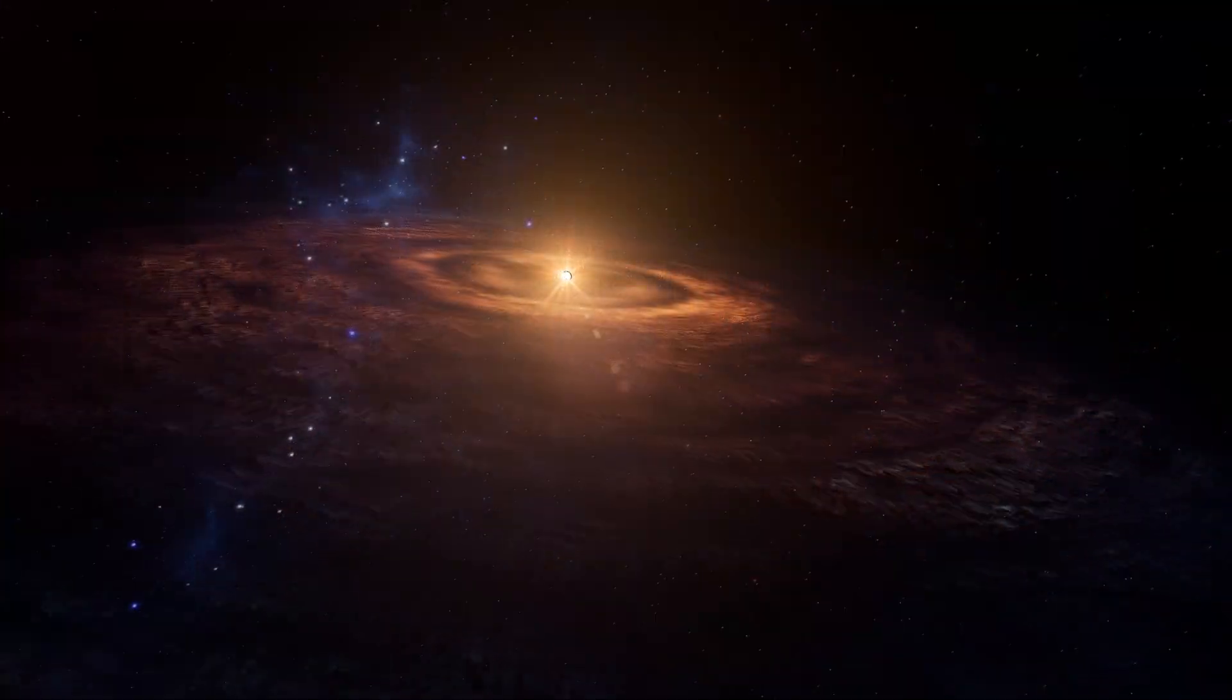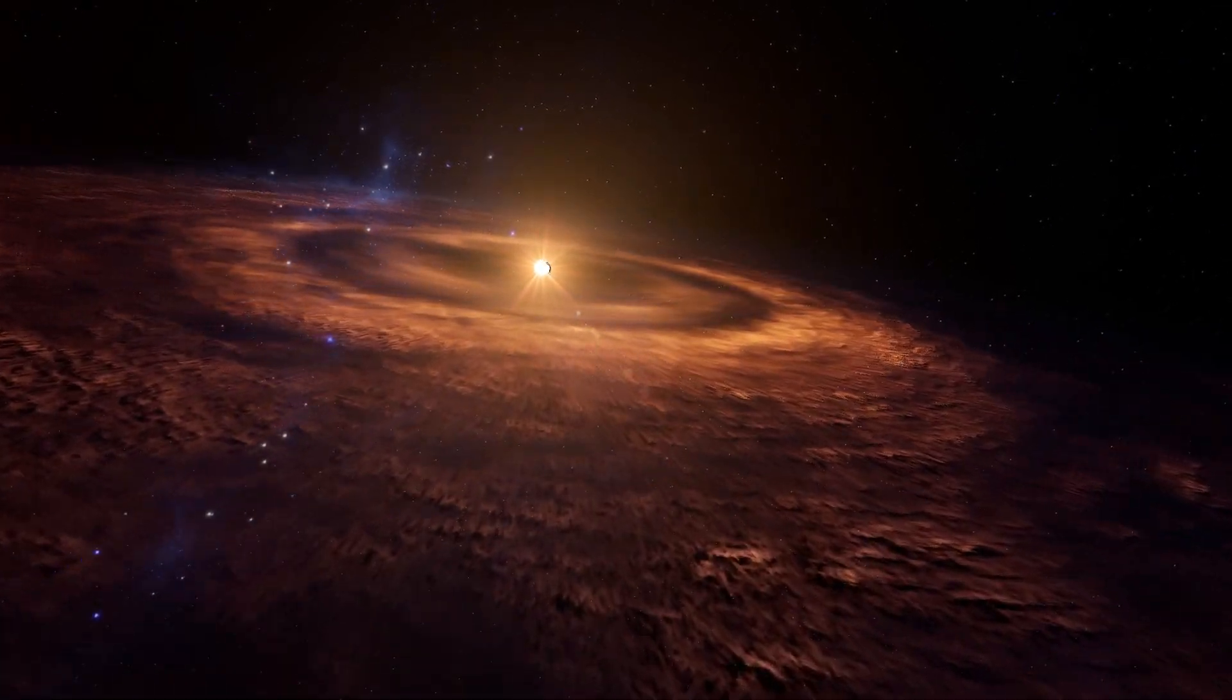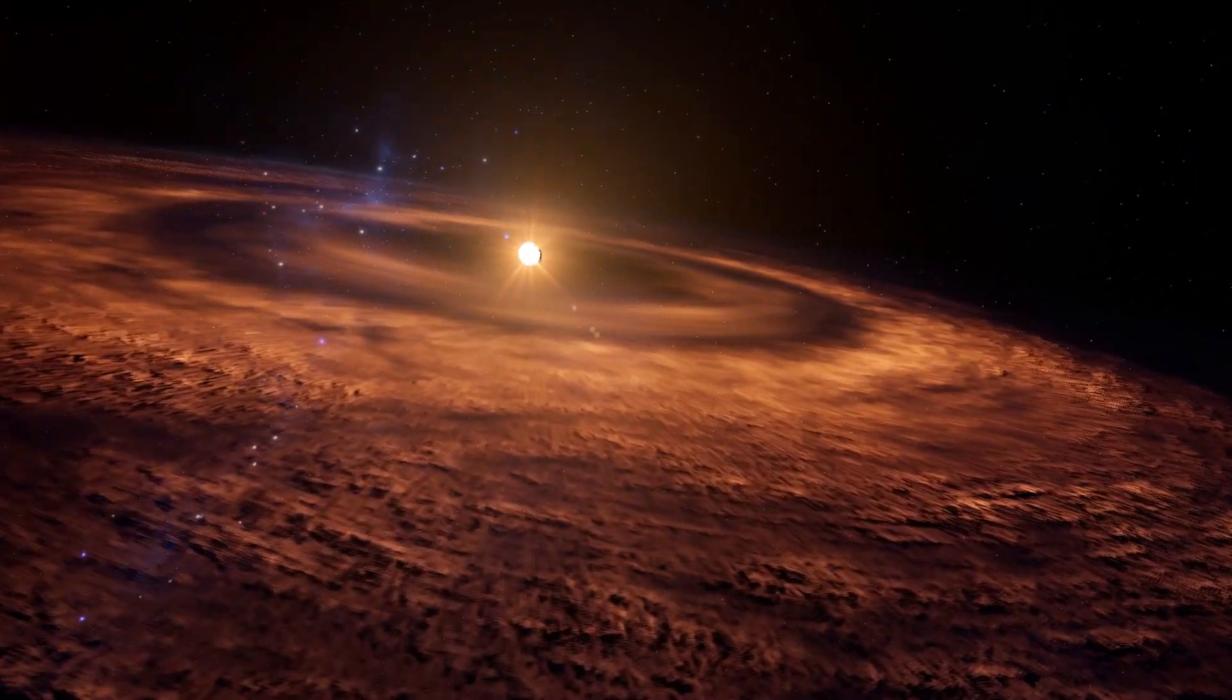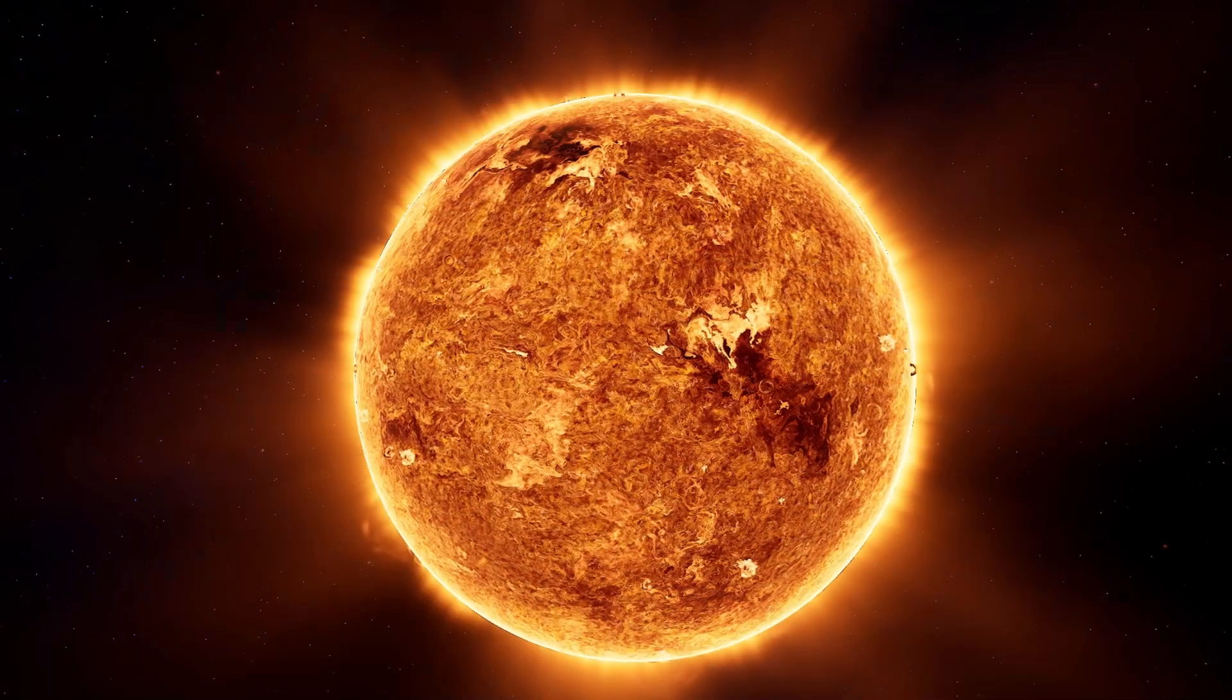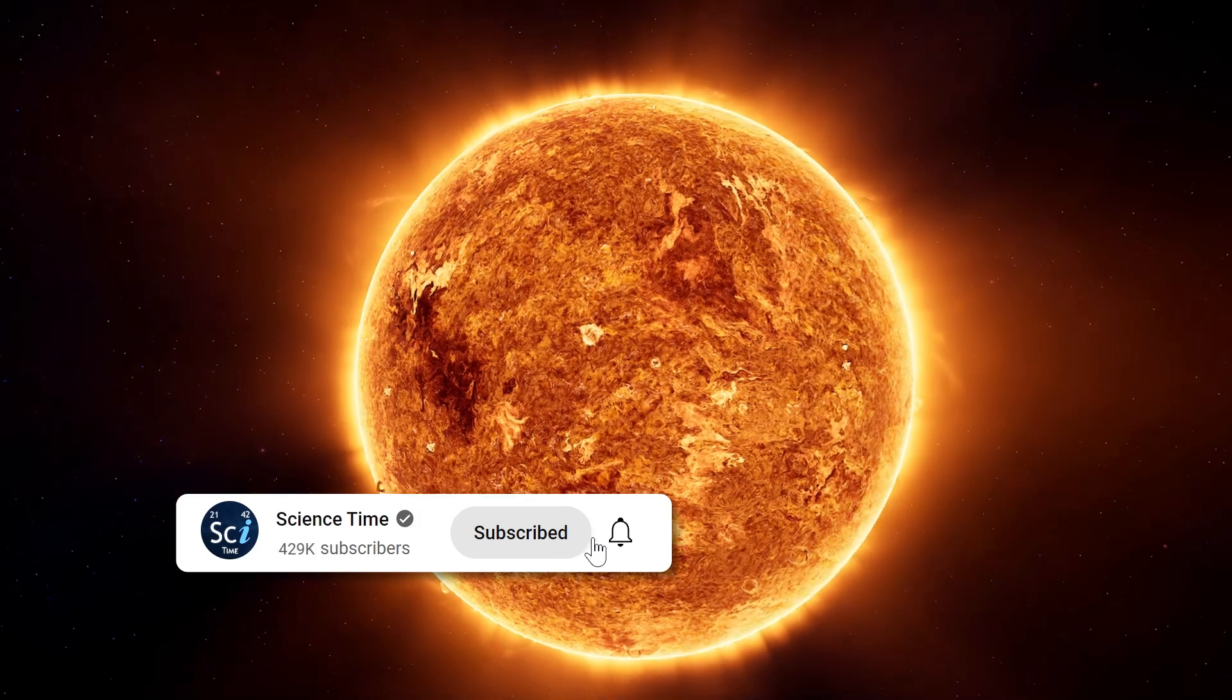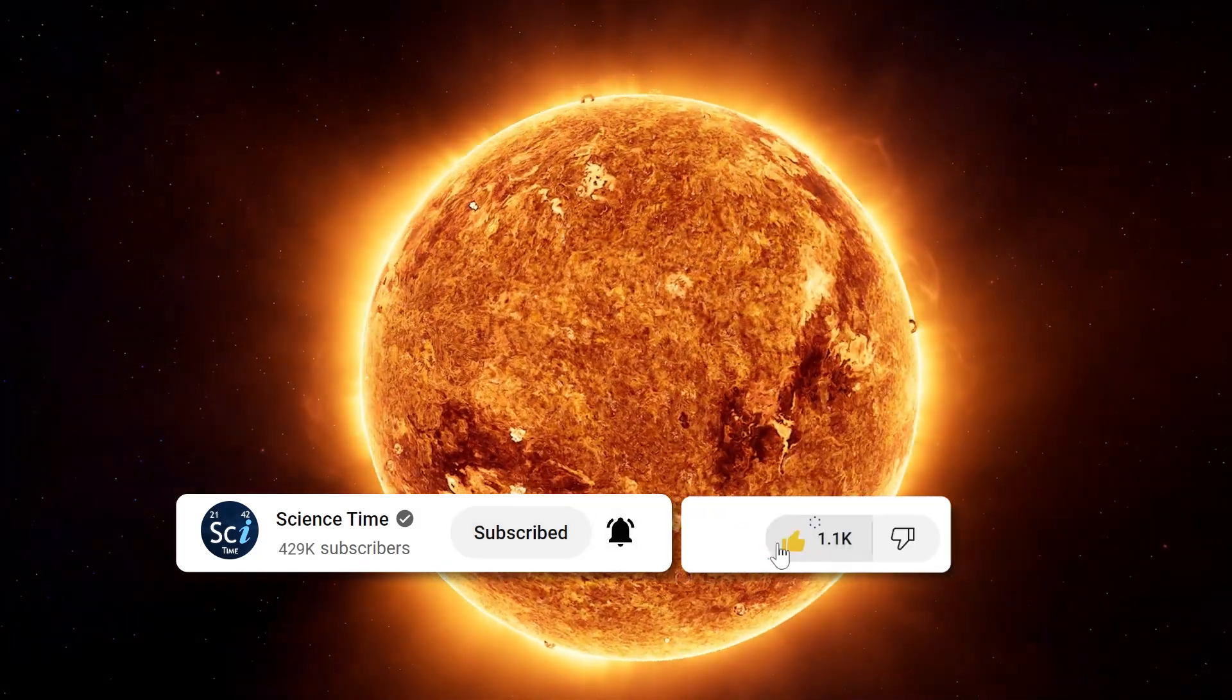All stars are formed from collapsing clouds of gas and dust, often called nebuli or molecular clouds. Over the course of millions of years, these protostars settle down into a state of equilibrium, becoming what is known as a main sequence star. About 90% of the stars in the universe belong to this family, our sun included.